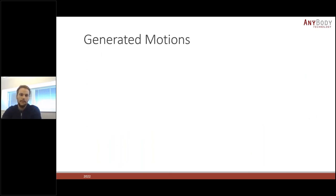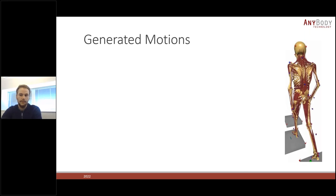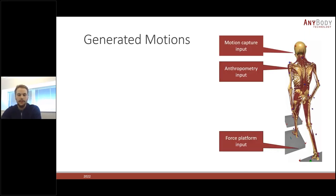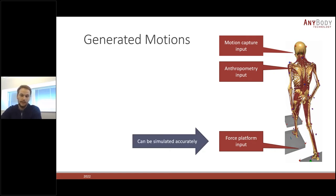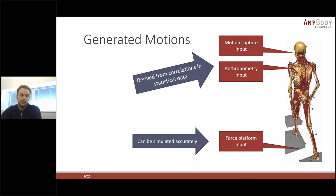We have been thinking a lot over the years about how we can help generate motions or alleviate some of those questions. To simplify, we need three things to make simulations work: knowledge about the force platform input, which we can accurately simulate; information about the motion capture input; and the anthropometry of the human to simulate. We have derived a method of doing this by using correlations in statistical data.